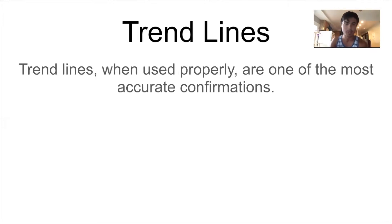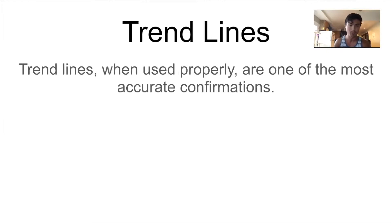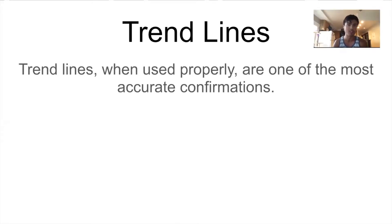Trend lines, when used properly, are one of the most accurate confirmations, and when used properly they can have a 90% win rate. The guy I learned this from is Jim Coleman — he's very quiet, you won't really see him posting. He's not much on Facebook, but he's one of the most profitable traders I know. He was showing me that with the trend line strategy you can literally win more trades than not. It's not recommended that you only take a trade based off one confirmation — use multiple confirmations — but if you have confirmations lined up with a trend line confirmation, chances are it's going to be a pretty solid trade.